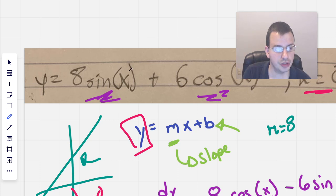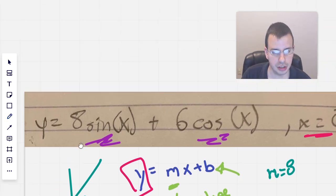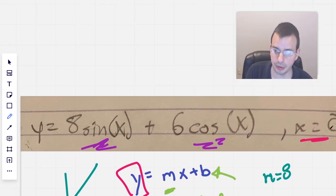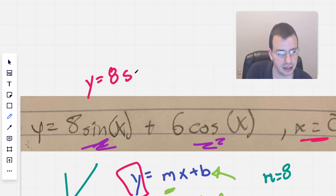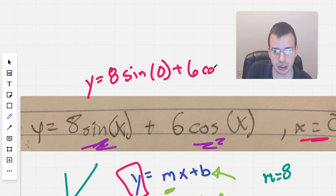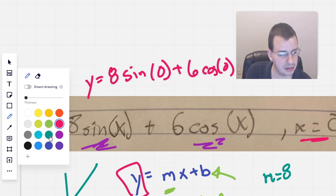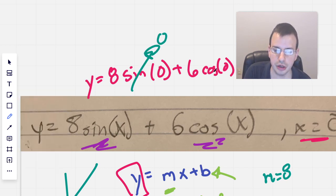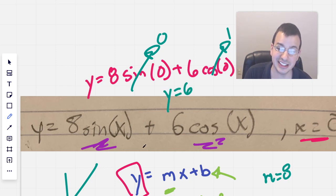To find this y, we're going to go back to our original equation up here. So when we plug in our point zero, we get y equals eight sine of zero plus six cosine of zero. Do the canceling again. I like green. It won't go so good. Sine of zero is zero. Cosine of zero is one. And so we'll have y equals six.